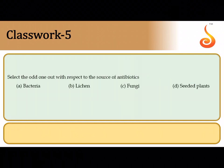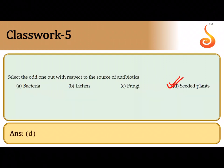The fifth question asks to select the odd one out with respect to the source of antibiotics. You get antibiotics from bacteria, from lichens, and from fungi. However, we do not obtain antibiotics from seeded plants or angiosperms, so the odd one out among the given options is the last option.